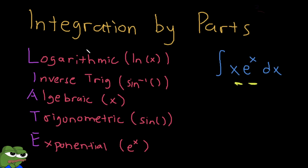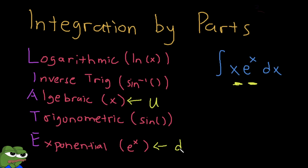There's a mnemonic called LIATE — it's a hierarchy for how to choose your u and dv. For example, with the integral of x·eˣ dx, one function is algebraic and the other is exponential. Whichever comes first in LIATE is your u, and whichever comes next is your dv. It's a simple rule of thumb, not a strict rule, but it will certainly help.